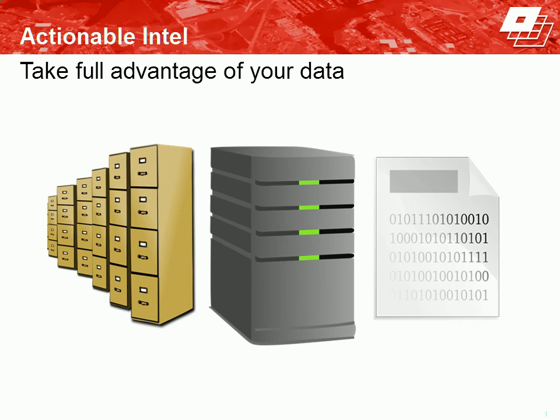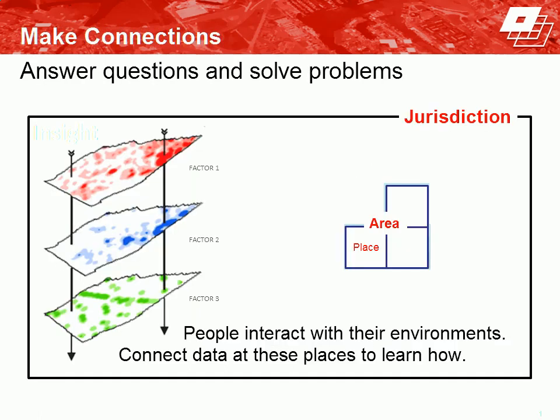We all want to be empowered to make informed decisions, to solve problems, and to get the credit we deserve for the success we've achieved. The public demands that our actions be measured, transparent, and evidence-based, and that resource utilization be sustainable — financially, politically, and with regard to community relations. By using geographic places as the thread that weaves information together, risk terrain modeling finds connections among data at shared places and times and identifies how the physical environment influences events.